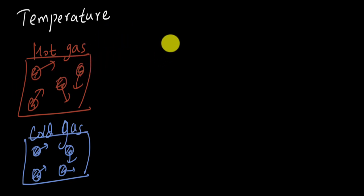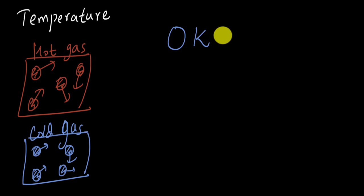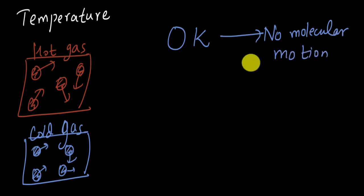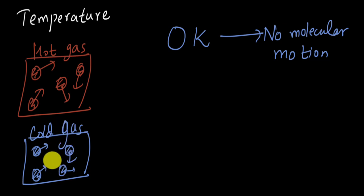This is our understanding of temperature. And if we use this understanding, then it is logical to believe that if we go to the lowest of temperatures — the absolute zero of temperature, zero Kelvin — then all molecular motion should stop. There should be no motion anymore, because when there was high temperature there was a lot of motion, and when there is low temperature there is very little motion. So if there is no temperature, there would be no motion.